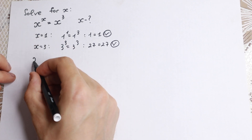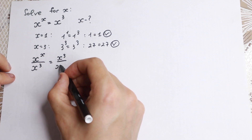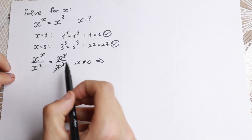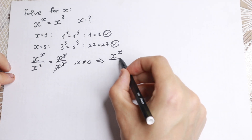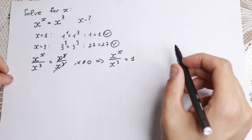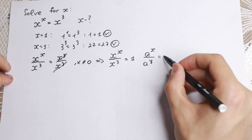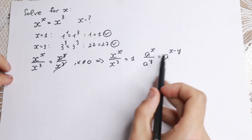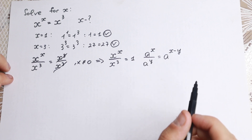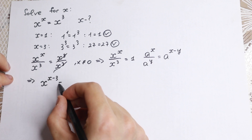First, let's divide both sides by x cubed. We have x to the power x over x cubed equals x cubed over x cubed. Of course, x is not equal to 0. We can cancel the denominator, so x to the power x over x cubed equals 1. Now, using the rule that a to the power x over a to the power y equals a to the power x minus y — for division we subtract exponents — our equation becomes x to the power (x minus 3) equals 1.